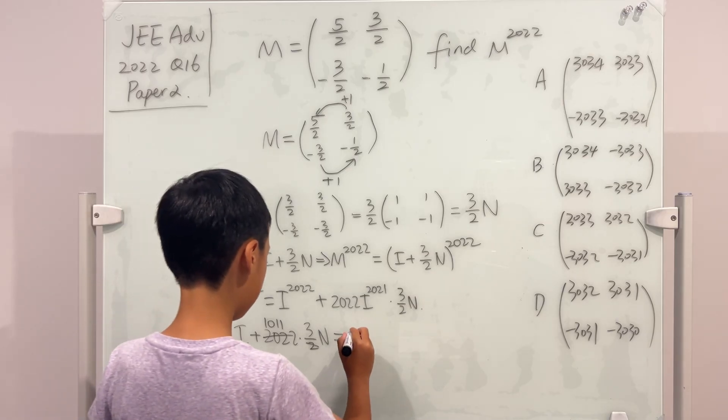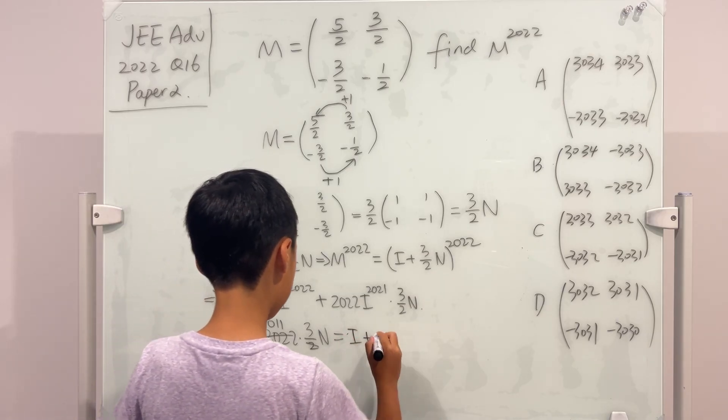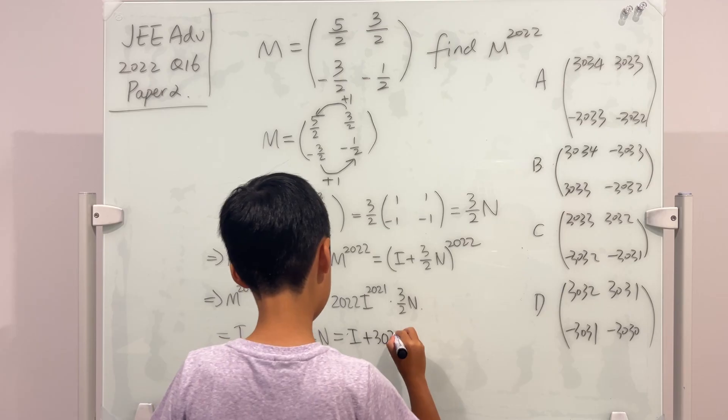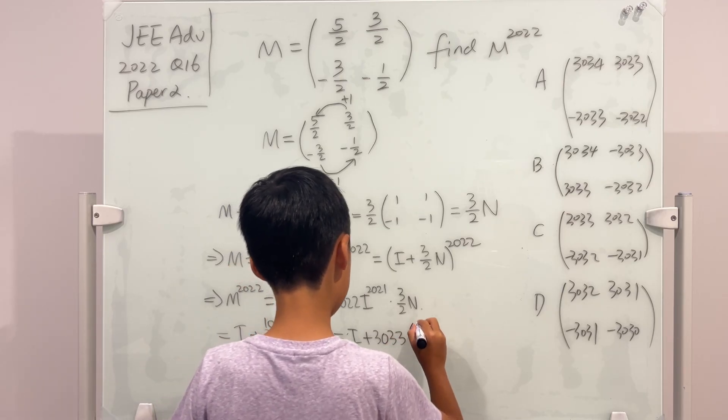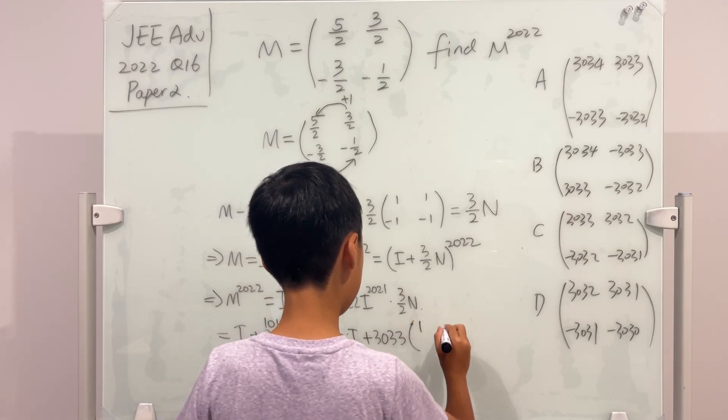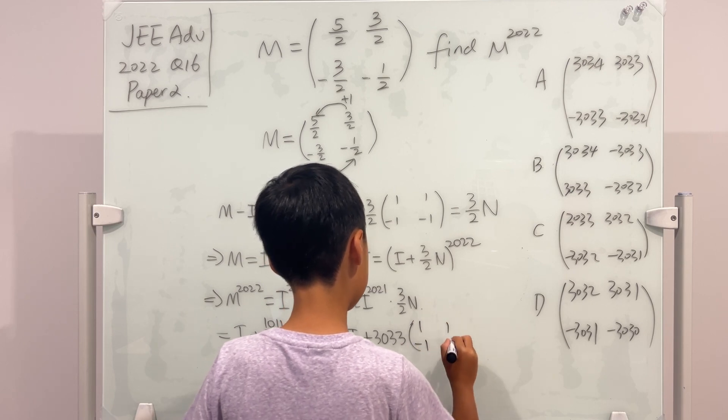So this is actually equal to I plus 3033 multiplied by the nilpotent matrix, which is 1, 1, negative 1, negative 1.